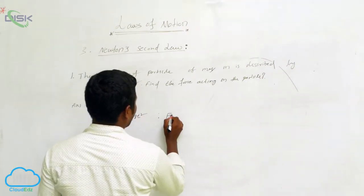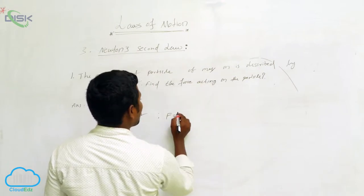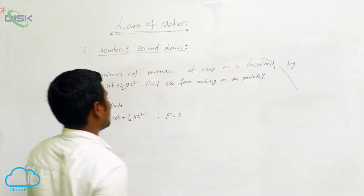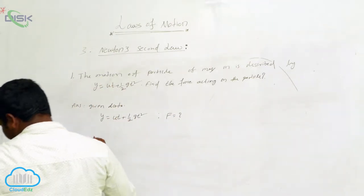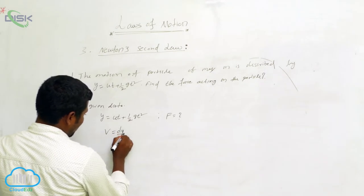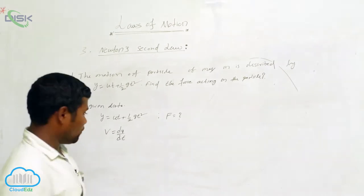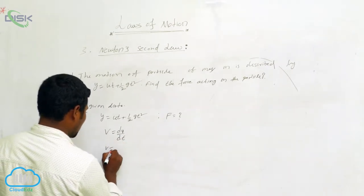Next, what is asking? F equals, find the force acting on that particle. F equals how much? So what we can write here simply? We can write v equals dy by dt. What is the meaning of this? My particle is moving in the y direction, then v equals dy by dt.